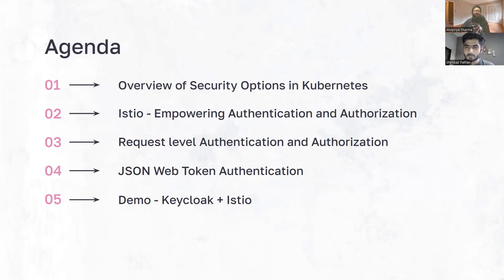Quickly getting into the agenda of what we plan to cover in this webinar. We would start by giving an overview of the various security options in Kubernetes. We'll then dive into Istio and see how authentication and authorization works with it. We'll also look at request-level authentication and authorization, take a quick look at JWT tokens, and finally get into the demo.